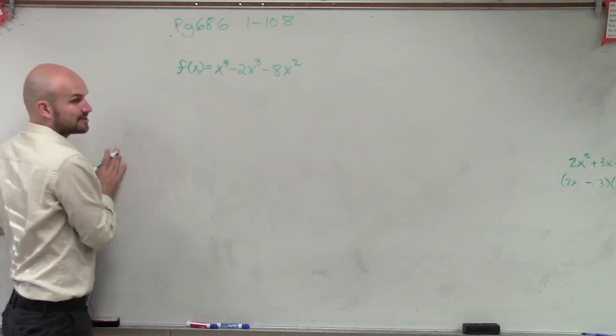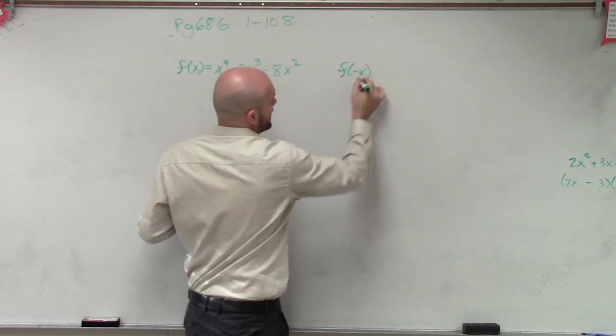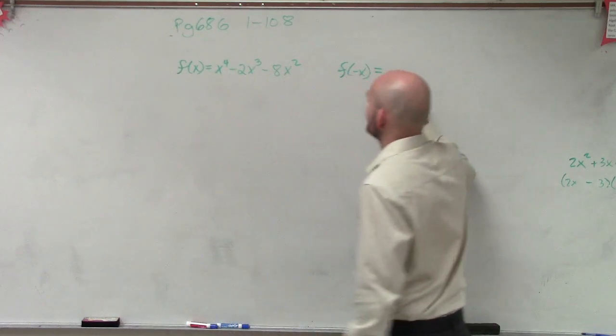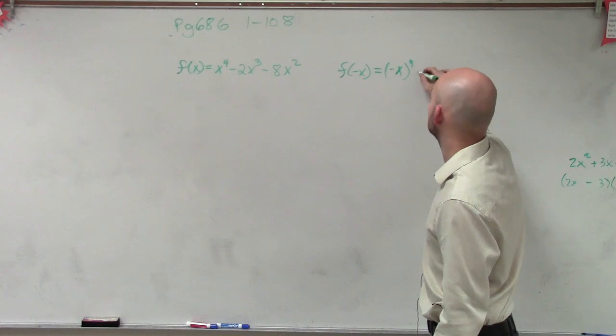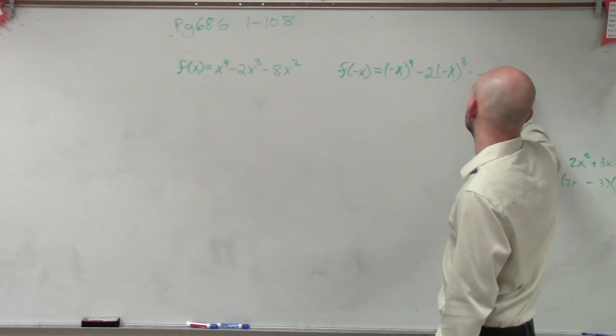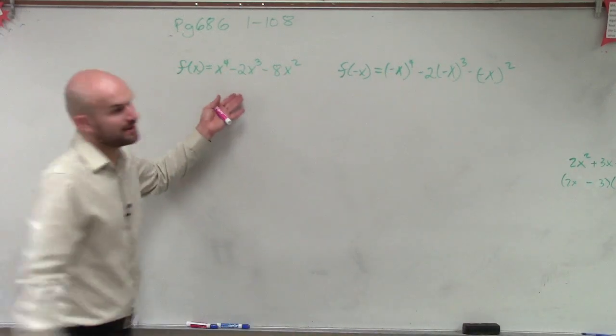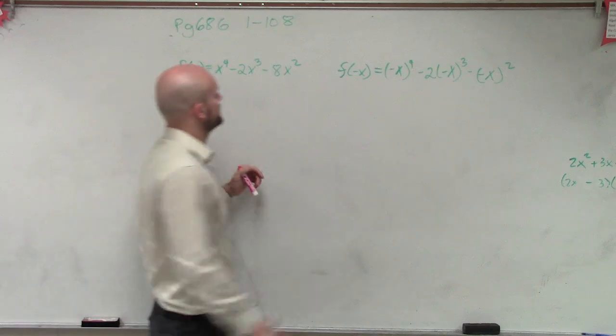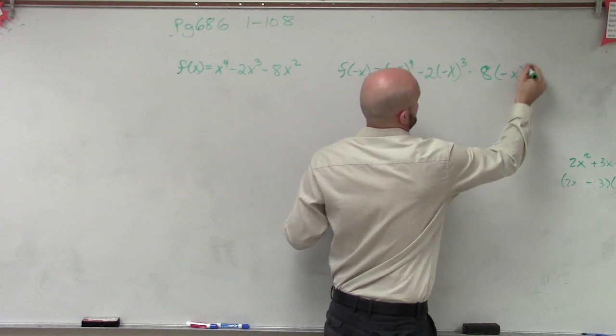So this is the positive form. The next thing we want to be able to figure out then is what about if I evaluate in for negative x? So therefore, you evaluate in for negative x, which would be negative x to the fourth minus 2 times negative x cubed minus negative x squared minus 8 negative x.